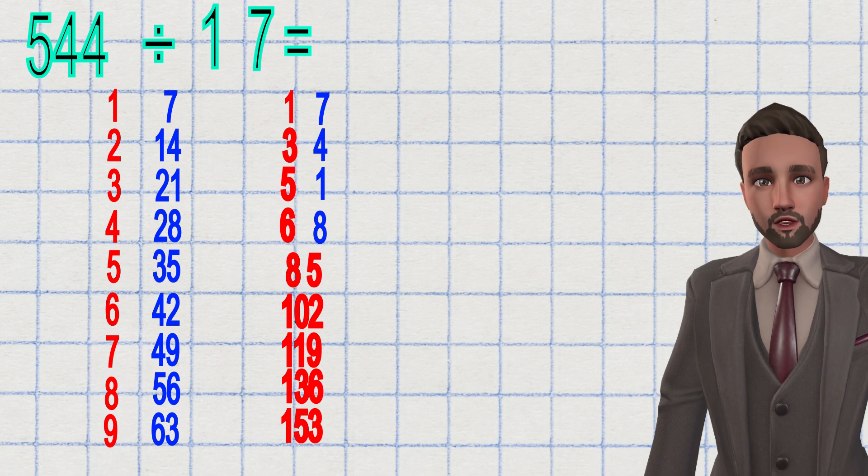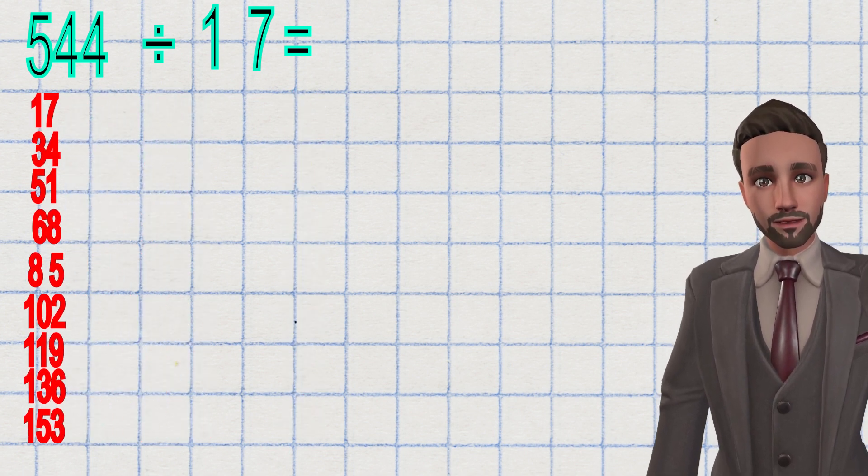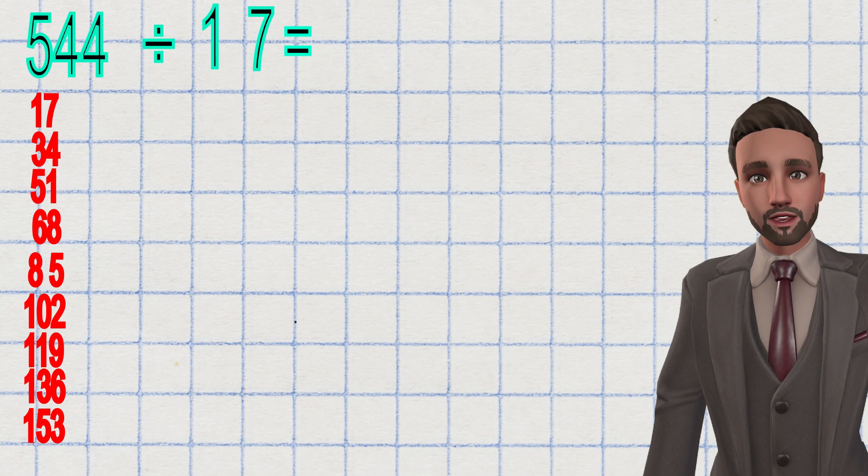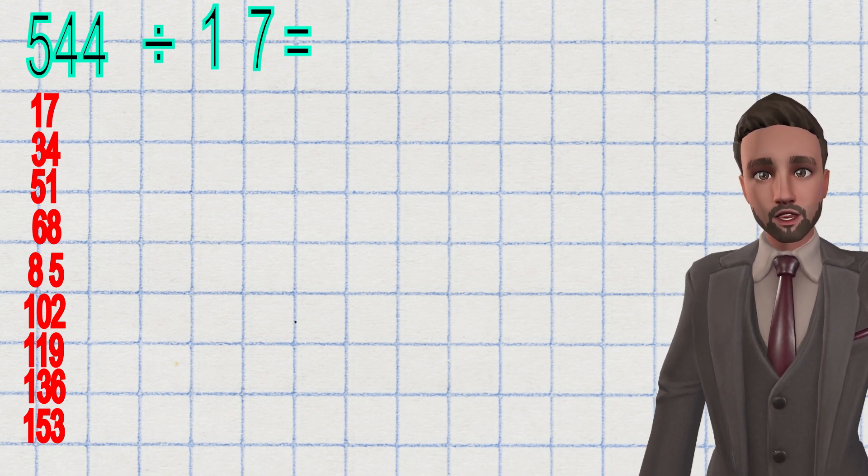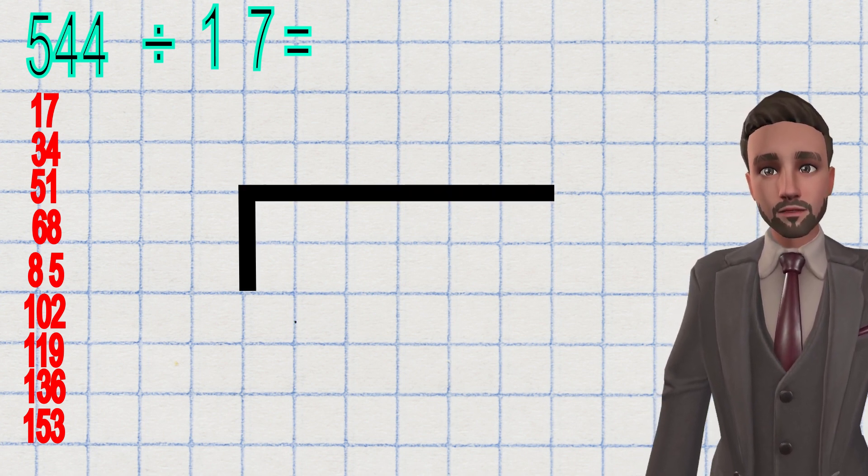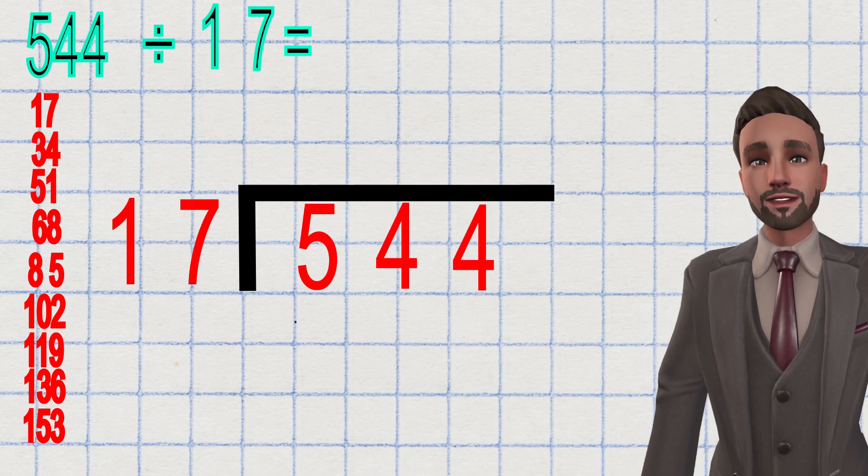I'm going to put my multiples of 17 here so I can use them next. Now I'm ready for the division part. I'm familiar with the bus stop method, so I'm going to use that. 544 on the inside and 17 on the out.